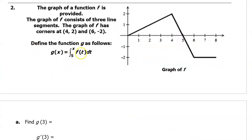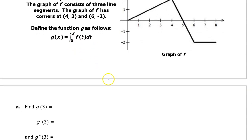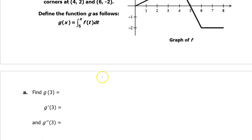Problem number 2. The graph of f is shown here. And g of x is the integral defined function — the integral from 5 to x of f at t dt. We need to find g at 3, g prime at 3, and g double prime at 3.